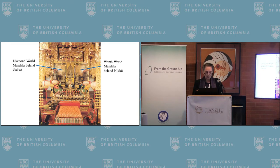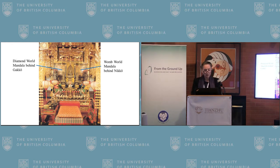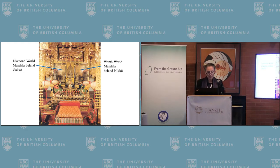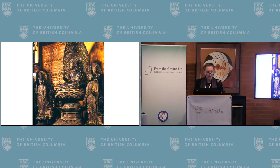Yakushi is flanked by Nikko and Gakko, who personify the light of the sun and moon respectively. This temple dates to the reign of Emperor Shomu, who established a network of national Buddhist temples, or Kokubunji, in 741. Though the temple was destroyed by fire many times since then, this is a typical sculptural arrangement for the period — we can think of Yakushi-ji and Shin Yakushi-ji in Nara as comparative cases. The post-ninth-century addition of the two Shingon mandalas behind Nikko and Gakko is an altogether innovative addition.